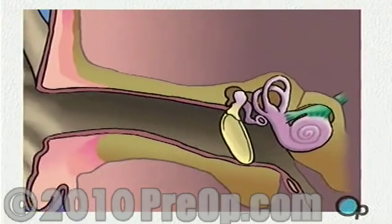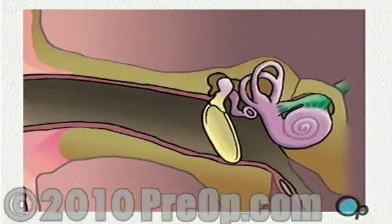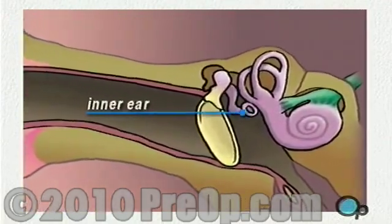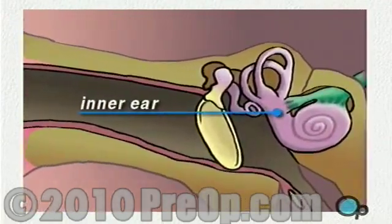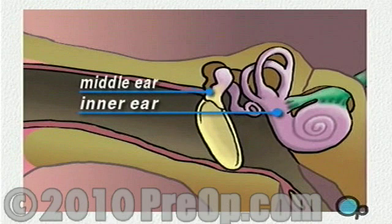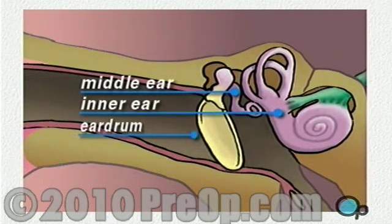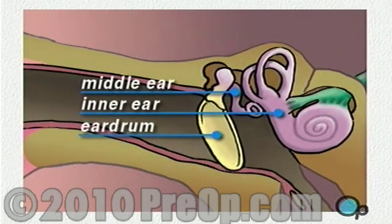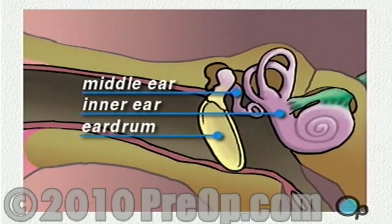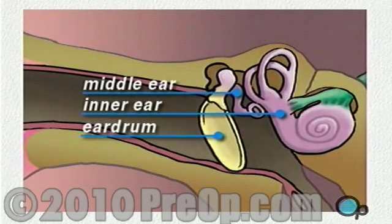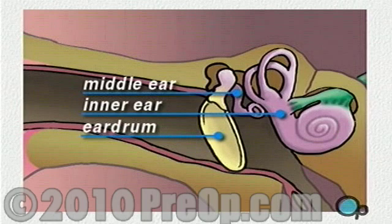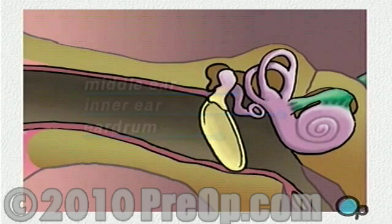The human ear is made up of two chambers: the inner ear and the middle ear. The middle ear is sealed off from the outside environment by the tympanic membrane, or eardrum. In a healthy ear, this membrane acts to protect the delicate interior of the ear from contamination.